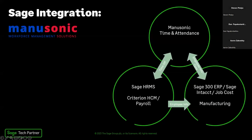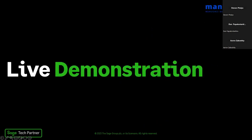We are fully integrated with Sage 300 — both the payroll and job cost sides — as well as manufacturing add-ons for Sage 300, Sage HRMS, and Criterion HCM HR and payroll systems. Information can flow in and out of these systems; we custom-tailor the integration for every implementation. If you create a new hire in Sage HRMS, it flows to payroll and then to the Manusonic time and attendance system. Once the administrator prepares time and attendance for transfer, it flows back into payroll and updates the time card in Sage 300 payroll. We'll demonstrate this in the software portion now.